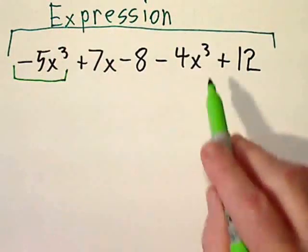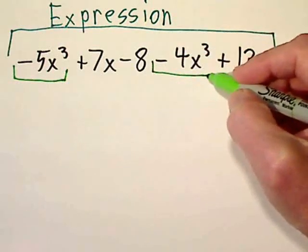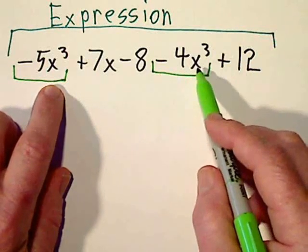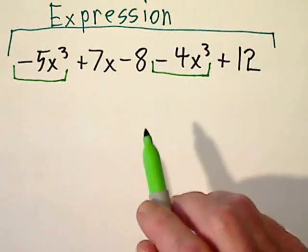This x to the third, do we have an x to the third anywhere else right here? So the negative 5x to the third, the negative 4x to the third, those are like terms. So we're allowed to put them together.